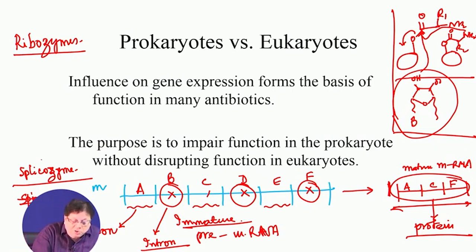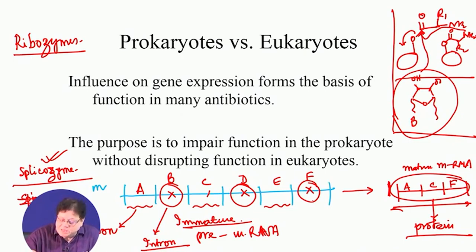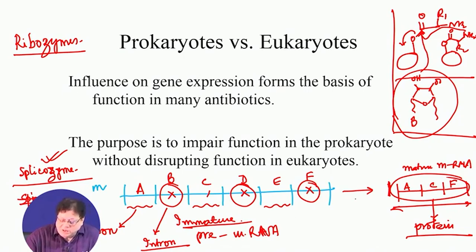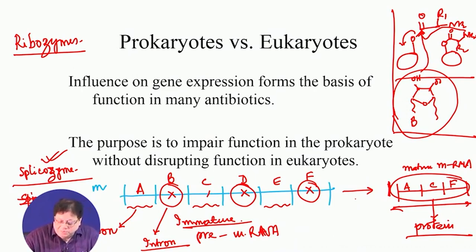Coming back to the spliceosome — this splicing is also done by RNA molecules. The RNA molecules themselves do the splicing and join the exons together. So that is another example where RNA can act as an enzyme. This is Nobel Prize-winning work by Thomas Cech, who first showed that RNA can act as an enzyme. These are the two examples: one is peptide bond formation, and the other is splicing of the pre-mRNA into the matured form.